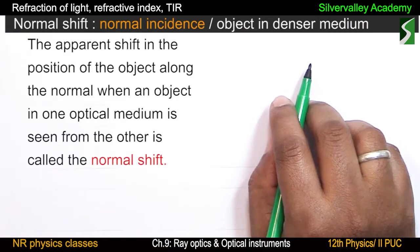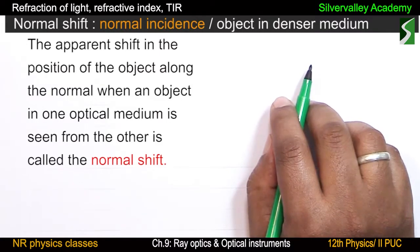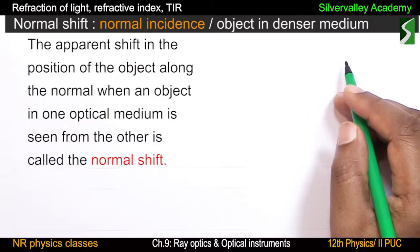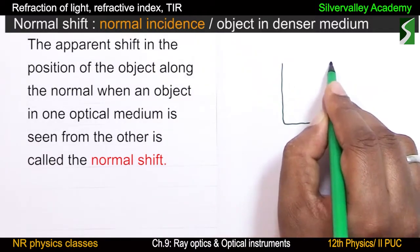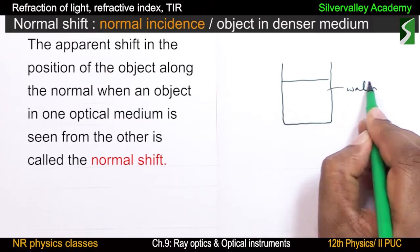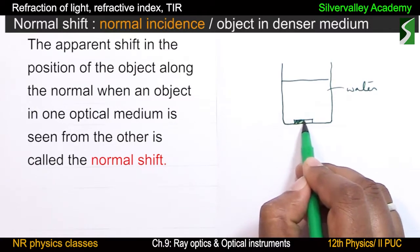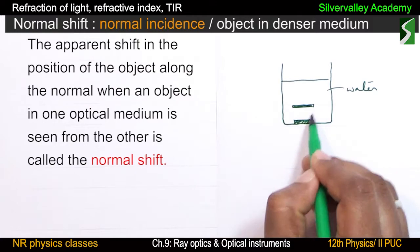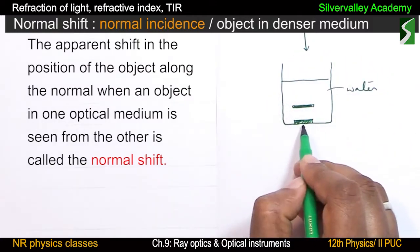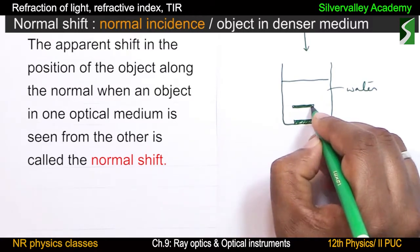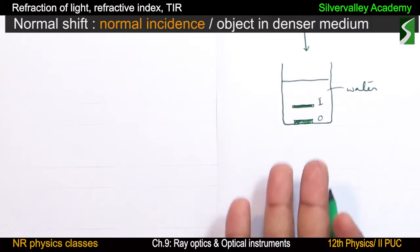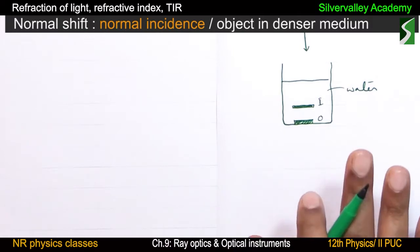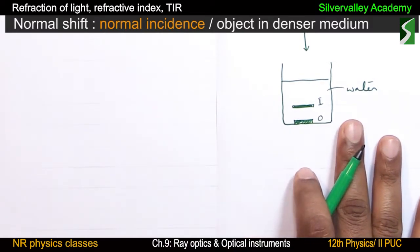Normal shift: the apparent shift in position of an object along the normal when an object in one optical medium is seen from another is called normal shift. You may have observed this — in a container with water, an object at the bottom appears to be raised when viewed from above. In a swimming pool, the bottom appears raised but actually is not. This optical illusion is called normal shift.